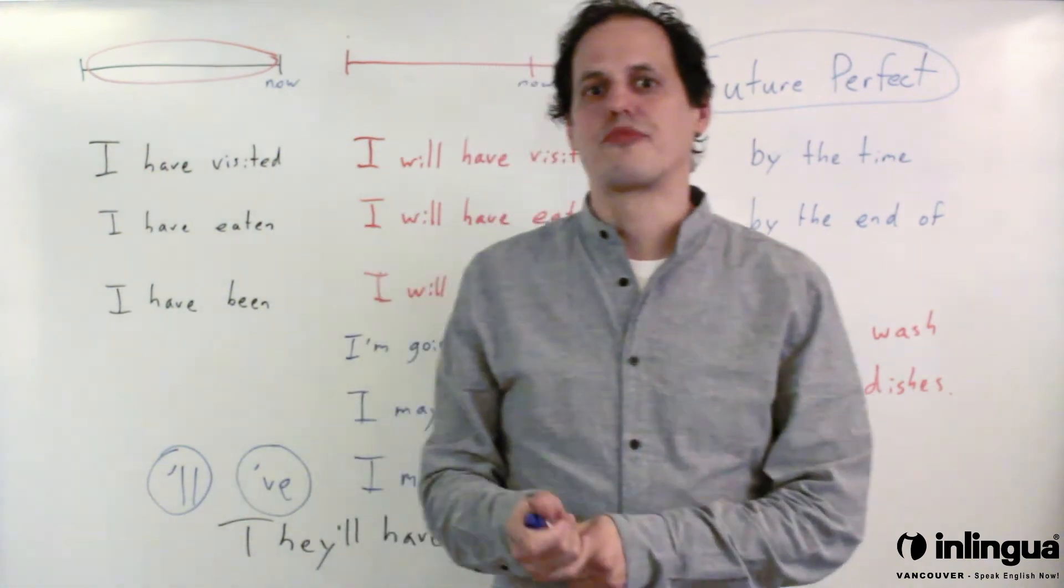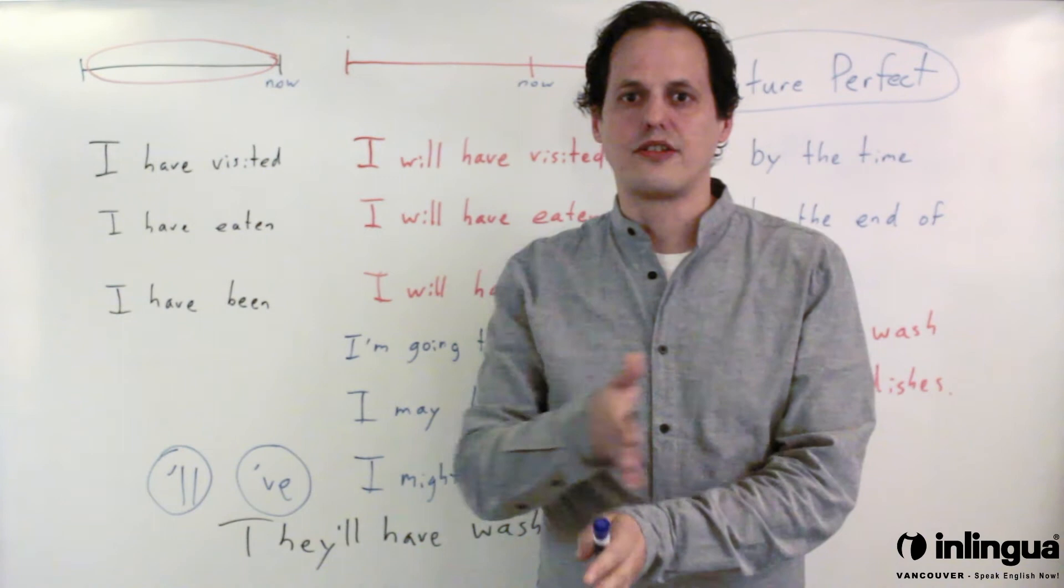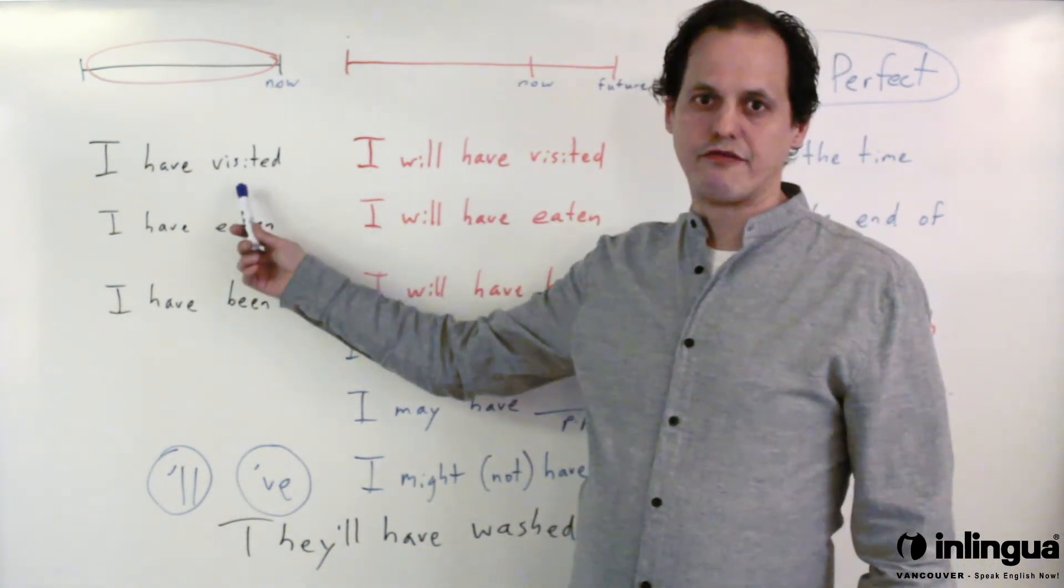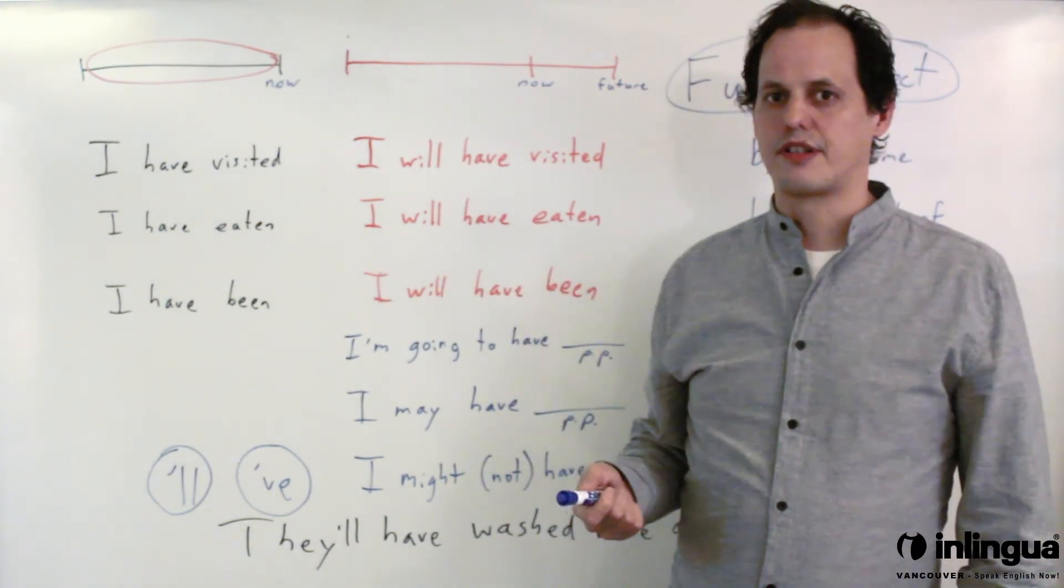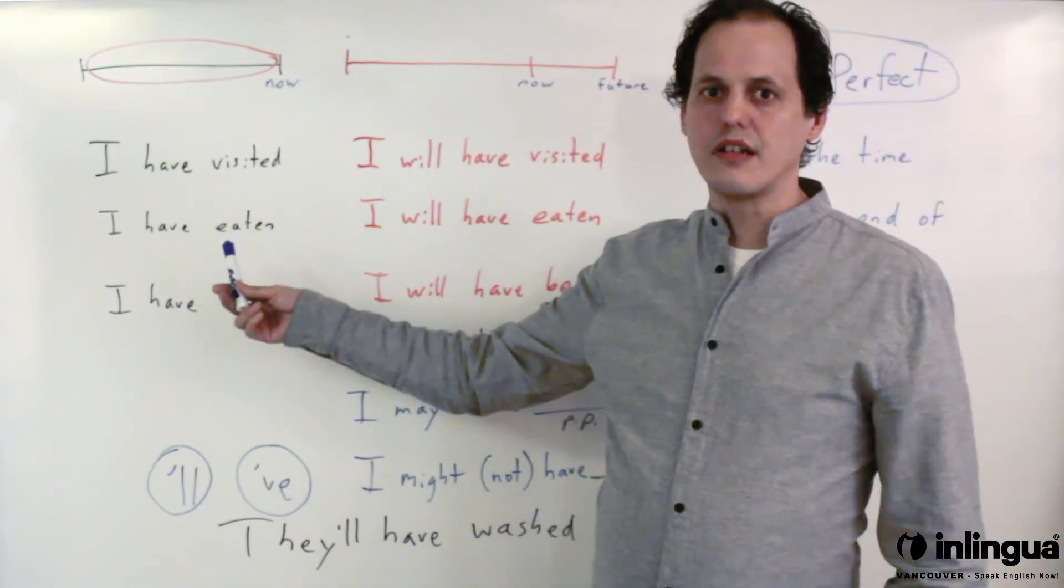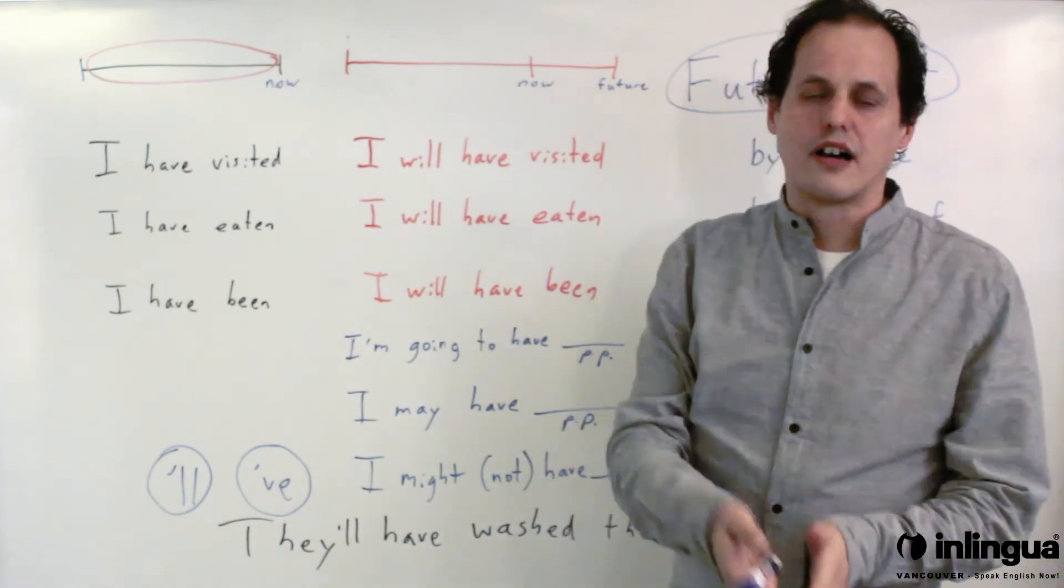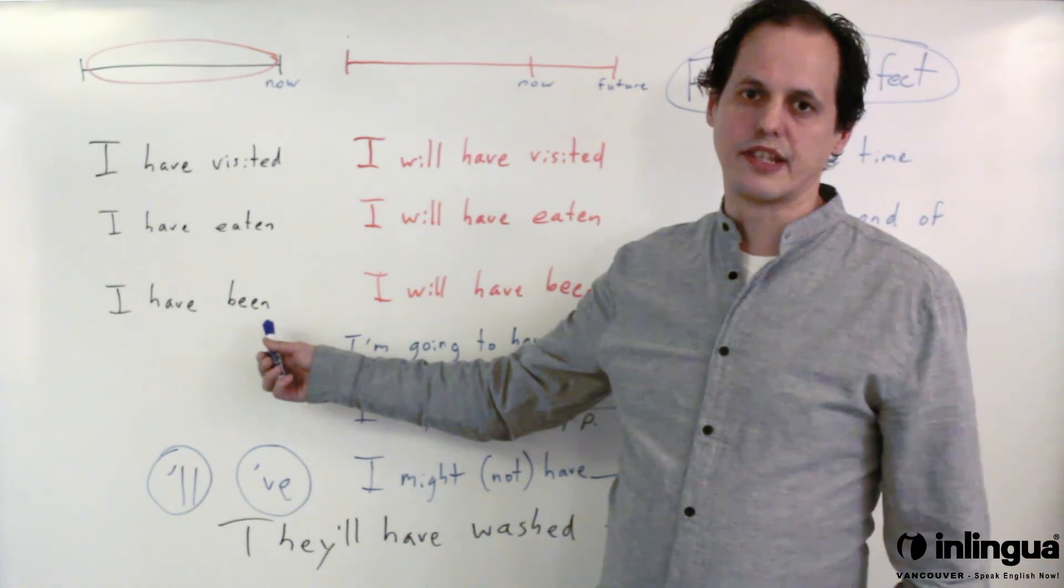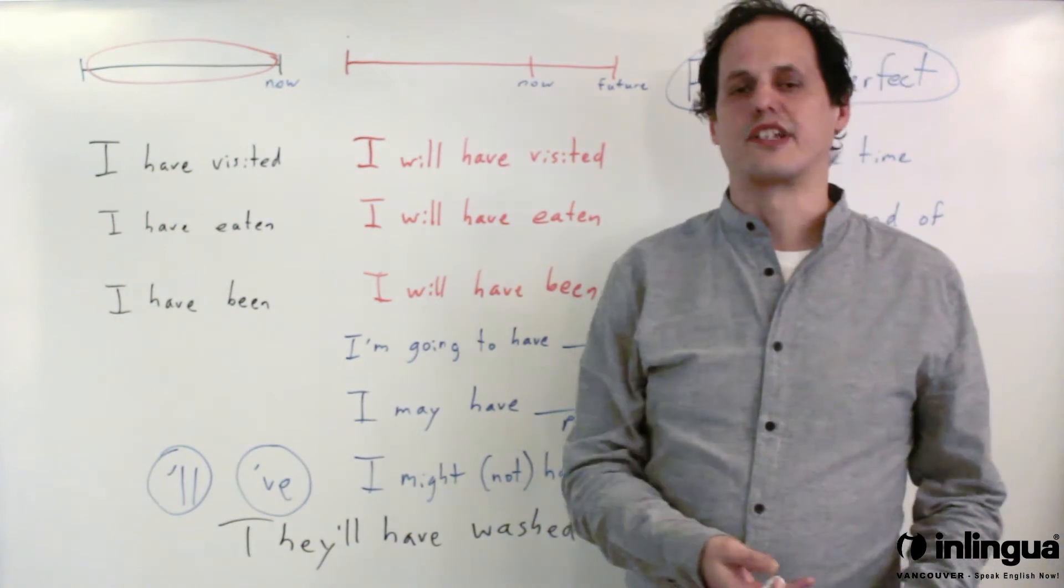One of the things you can use to practice future perfect is you can compare your present experience with your future experience. So for instance, I have visited five countries, but by the end of my trip I will have visited eight countries. I have eaten sushi, but by the end of my time in Vancouver I will have eaten other kinds of food as well. I have been a student at this school for three weeks, but by the time I graduate I will have been a student for six months.